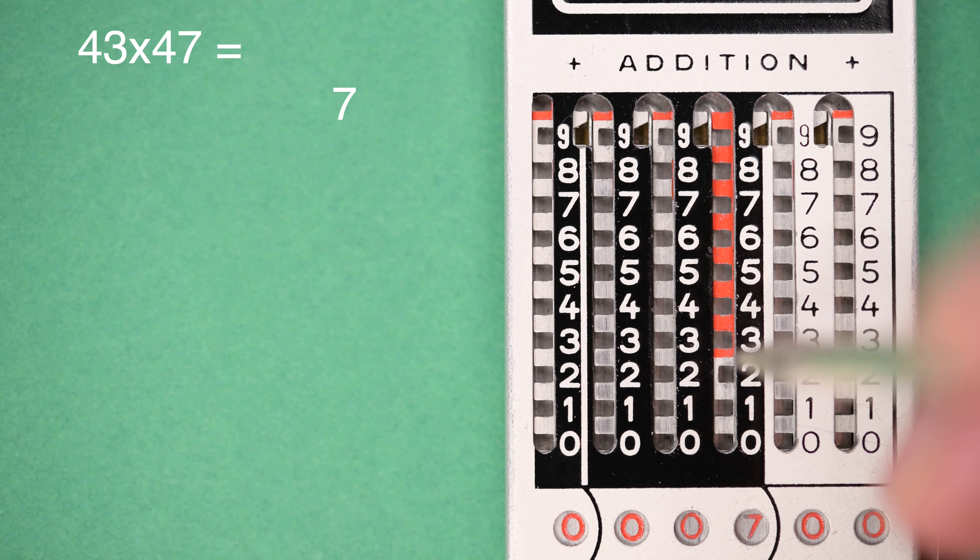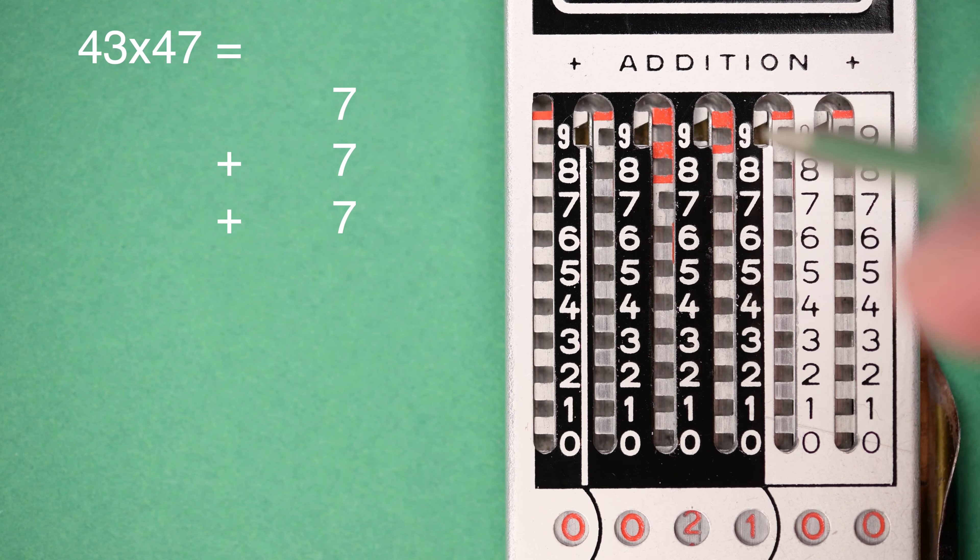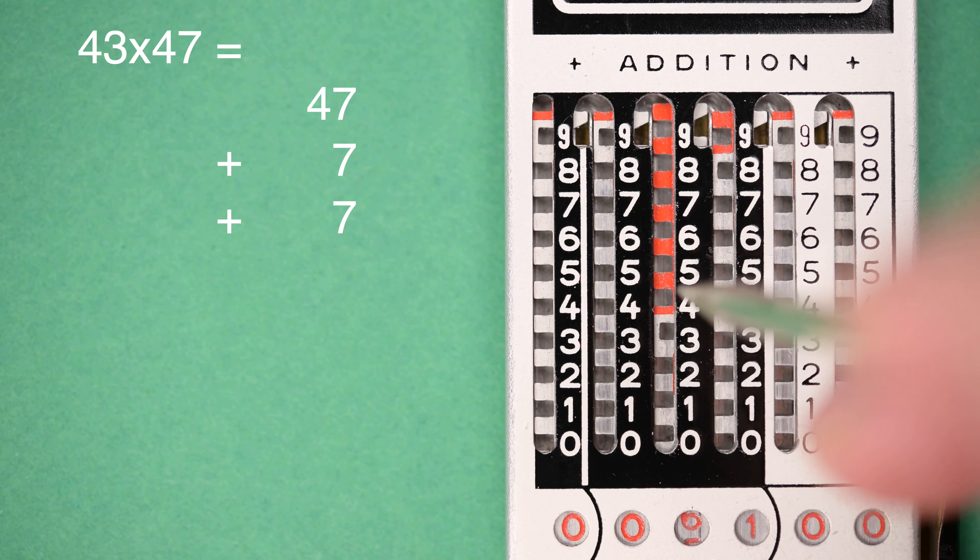That's 3 times 7 on the ones, and then 3 times 40, which is 4 times 10 on the tens.